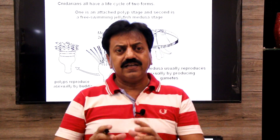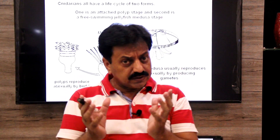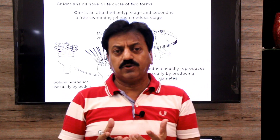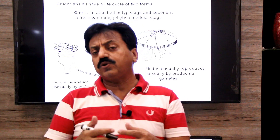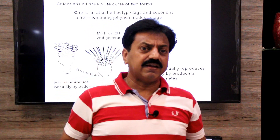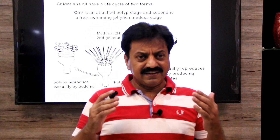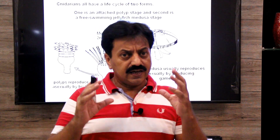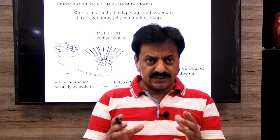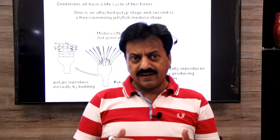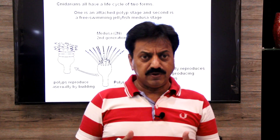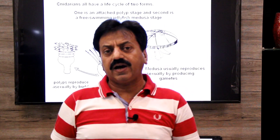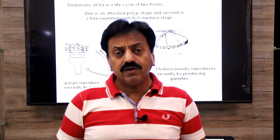Since both generations are diploid and gametic meiosis occurs, this life cycle is called a diplontic life cycle. In Cnidaria, the life cycle is a diplontic life cycle in which both generations are diploid and sperm and eggs are produced via meiosis (gametic meiosis).